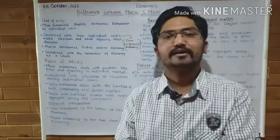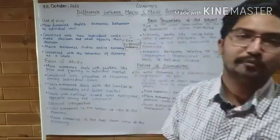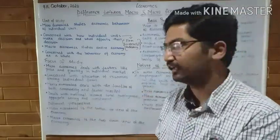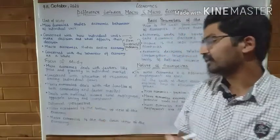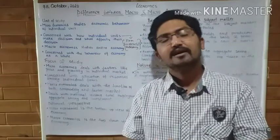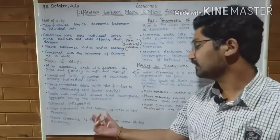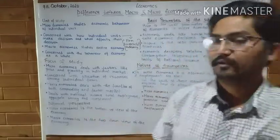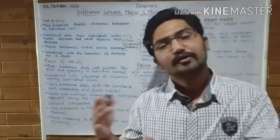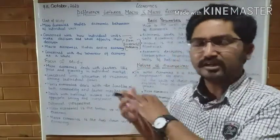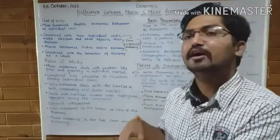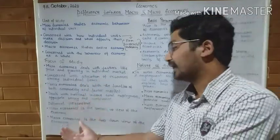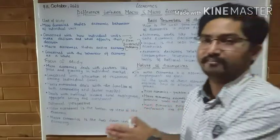The next differentiation point is perspective. You can also differentiate microeconomics and macroeconomics by their perspective. Microeconomics takes a bottom-up approach — it builds up from individual units. Macroeconomics takes a top-down approach — it looks at the economy from the top level downward. These are different perspectives for explaining the economy.